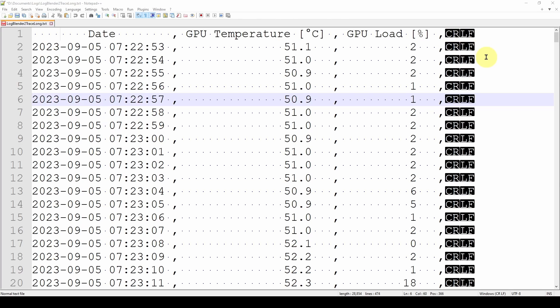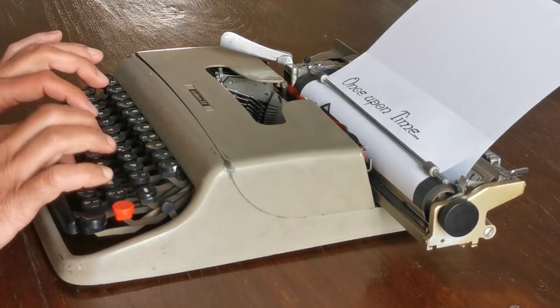To do that we have to take a trip back in time and look at what was available for making documents before there were computers. Here what you see is somebody typing on what's called a typewriter.